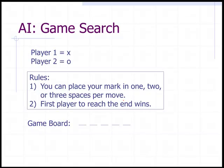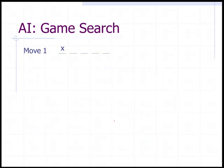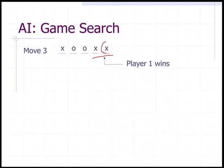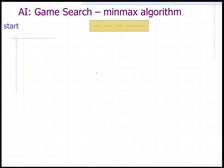Now we'll go through a game search example from AI. Player one's mark is X, player two's mark is O. The rules are: you can place your mark in one, two, or three spaces per move, the first player to reach the end wins, and the game board has only five slots. Move one: the computer puts an X in spot one. Move two: the human player puts two O's in the next two spots. Move three: player one — the computer — wins because it has two X's and its mark is last. To determine the optimal move, there's an AI search algorithm called the min-max algorithm.